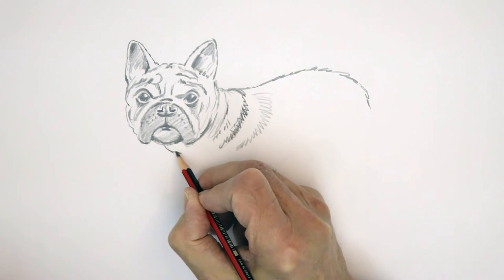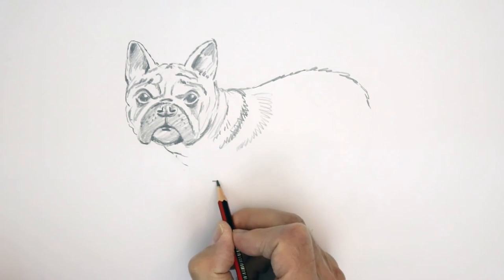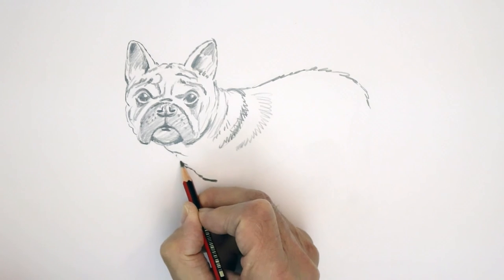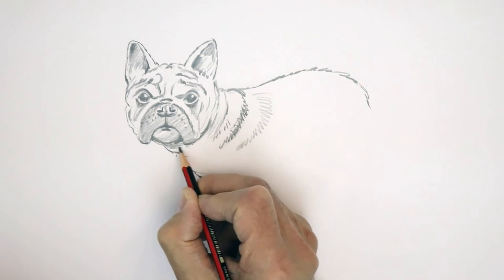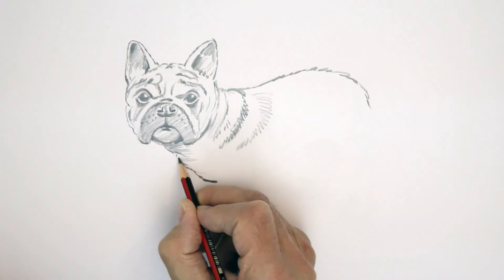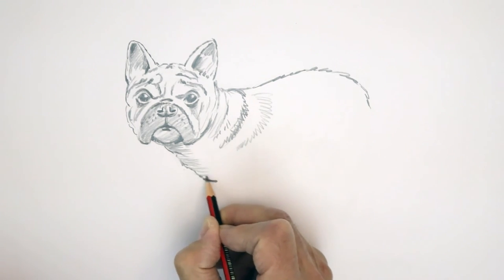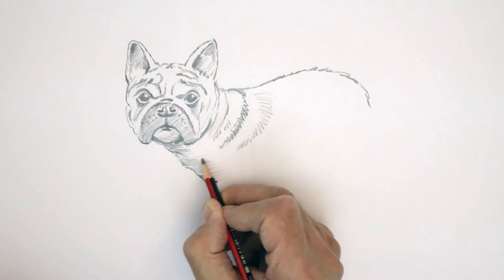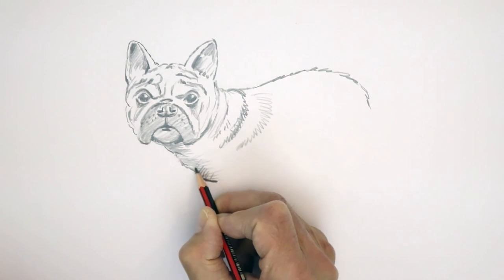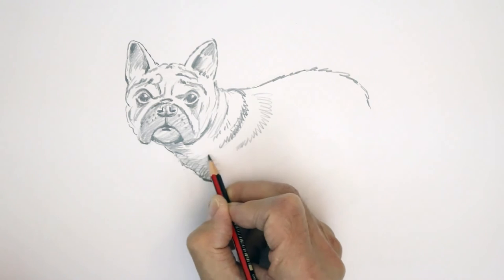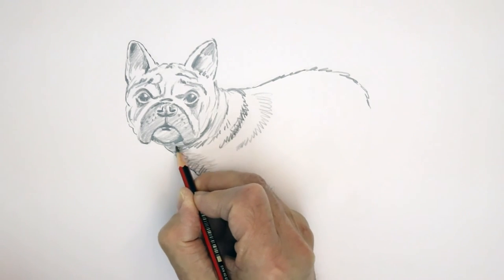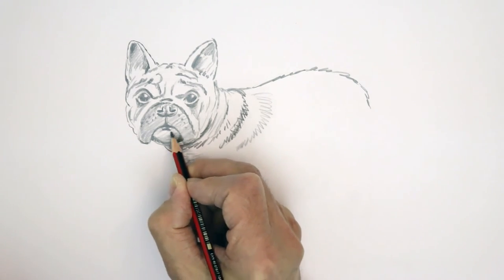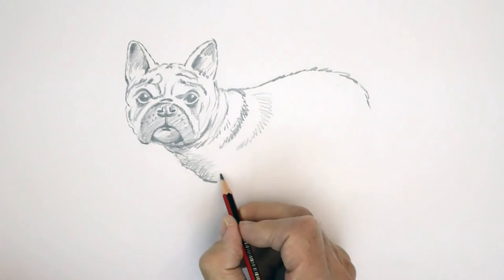And this front chest, we've got a deep chest there. And again, you can go with the curve of the chest with your pencil lines, or go across them. Make sure drawing that a bit more lively.